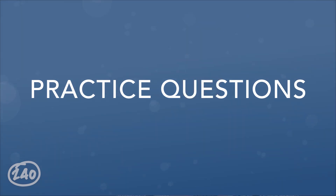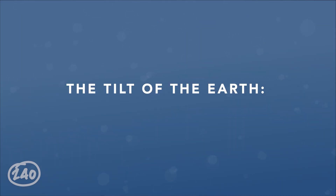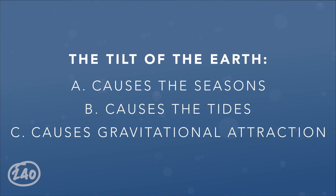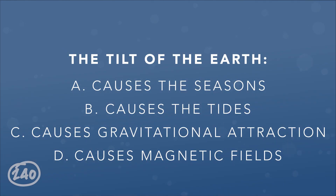Let's look at a few practice questions from the 240 Tutoring Study Guide. Question 1: The tilt of the Earth — A. Causes seasons, B. Causes the tides, C. Causes gravitational attraction, D. Causes magnetic fields. The correct answer is A. The Earth's tilt on its axis causes the four different seasons.